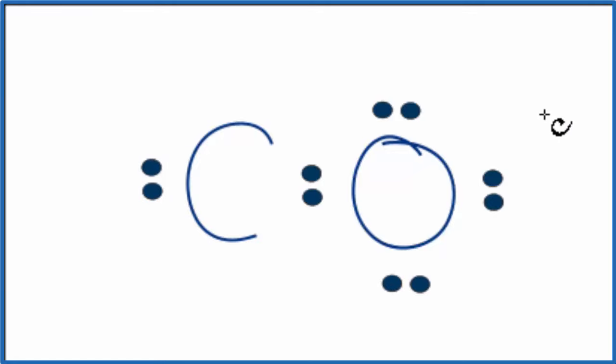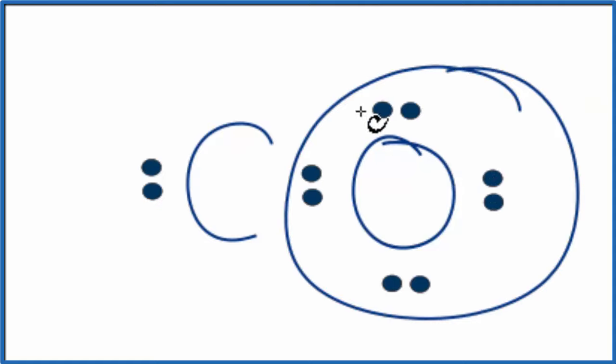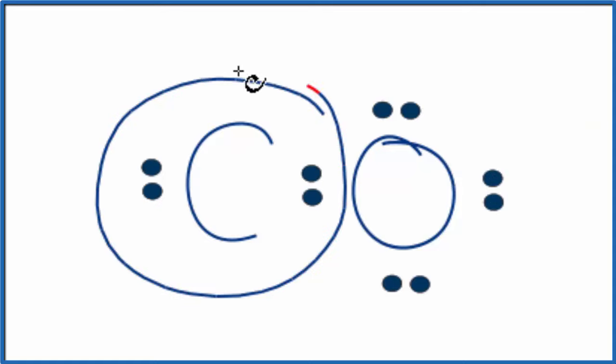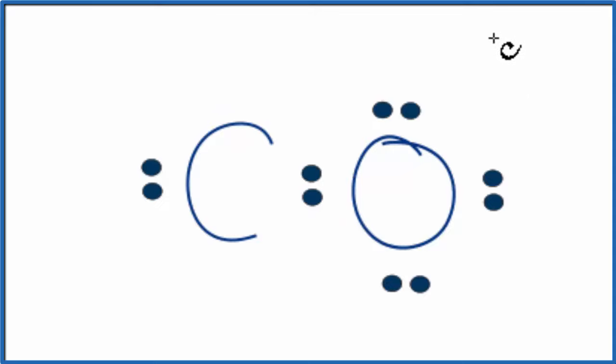You can see that the oxygen has eight, it has an octet, but the carbon, it only has four. So that's a problem. What we can do in Lewis structures is we can share more electrons. So let's take these two right here and put them between the carbon and the oxygen. So now we have a double bond.